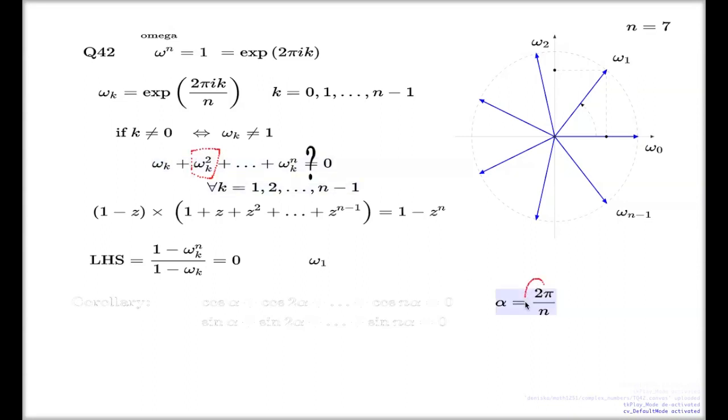The real part of omega_1 squared, it will be double of this angle, isn't it? Because when you square, you double the angle. So if you take the real part from here, the real part from here, the real part from the rest of them, that will be this expression.